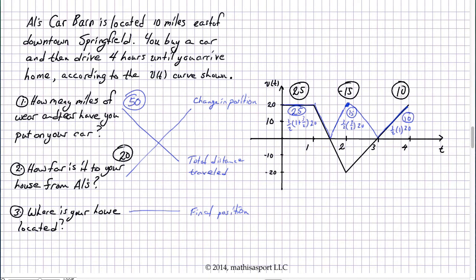Now where is your house located? This requires the initial condition. Now notice the initial condition is given in the word problem. Where is Al's car barn located? 10 miles east of downtown Springfield. And therefore we know that x of zero equals 10. Why? Because you start out right at Al's car barn. The car barn doesn't move as a function of time, but your car does. And it begins at x zero equals 10. So now it's the initial position plus the change in position. And so your house is located 30 miles east of downtown Springfield.